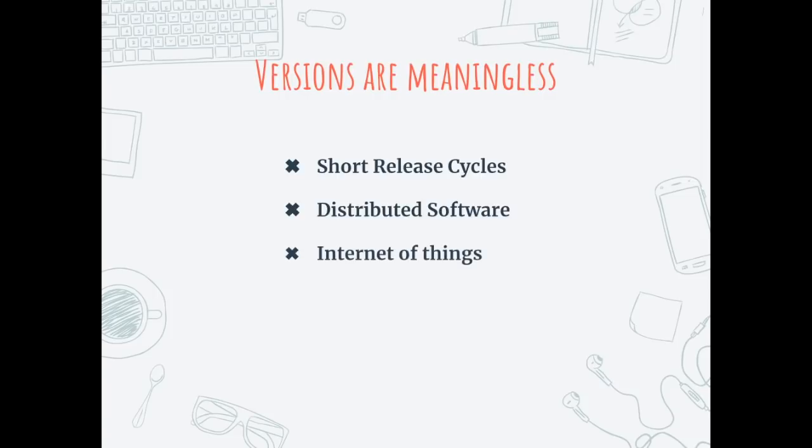With the Internet of Things, every software update is pushed to every device. Take Alexa or Google Home — your software gets automatically upgraded on the fly without you even being notified. That is the level of automation we are talking about.